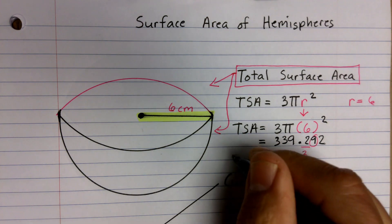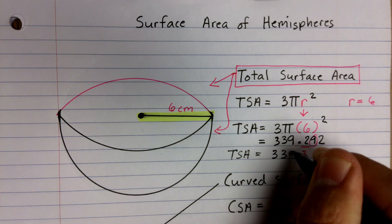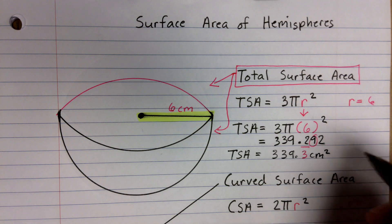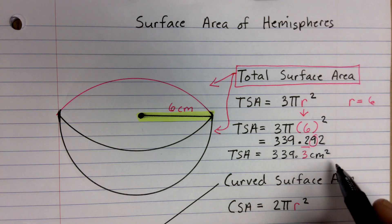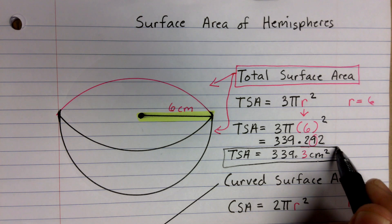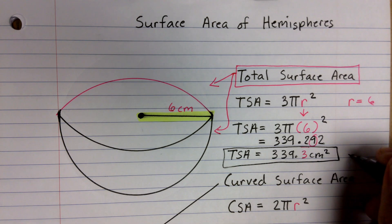So my final answer is going to be the total surface area is equal to 339.3 centimeters squared. Because we're talking about surface area, so it's going to be squared units. And that's the answer to this first one.